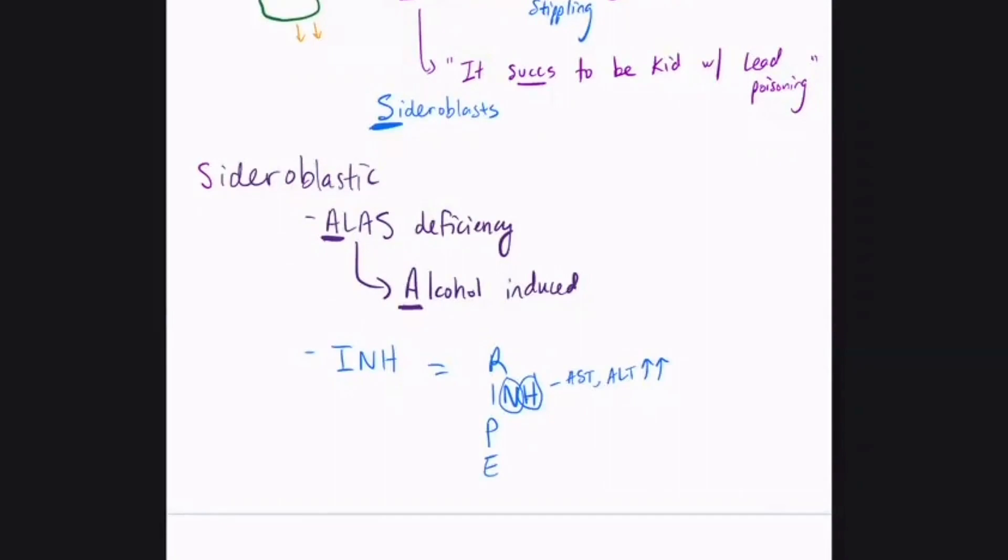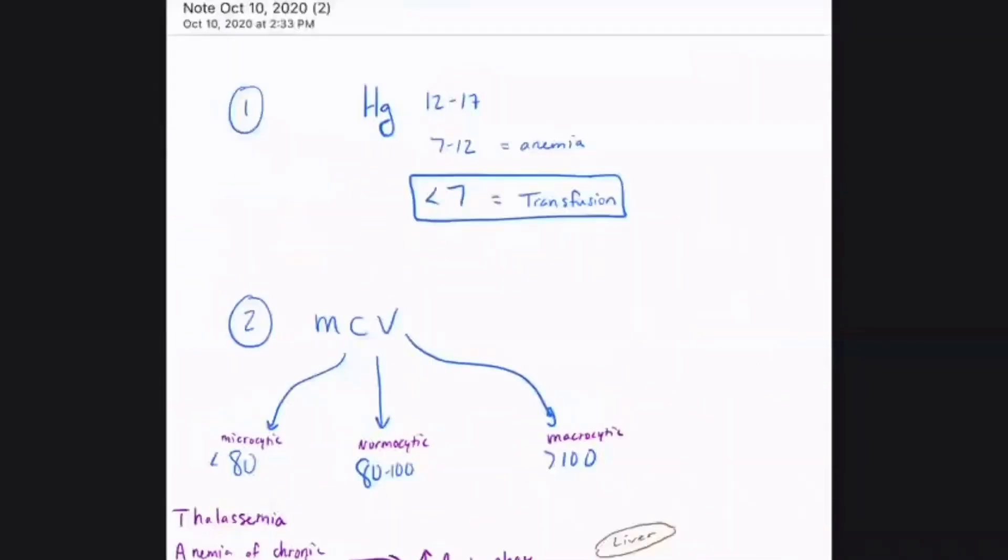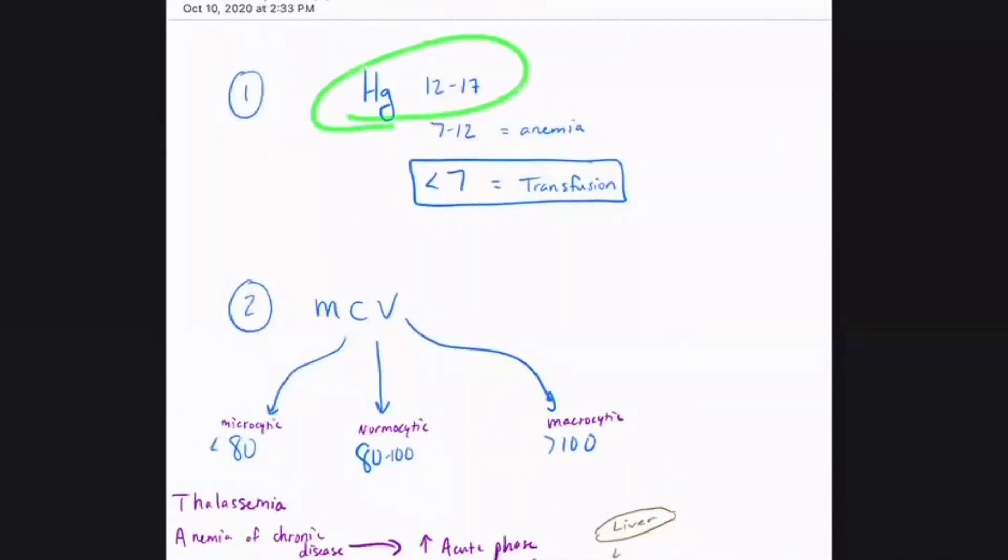And they're also going to have dyspnea because they're going to be short of breath. So think about why they'd be short of breath. The whole role of a red blood cell is to basically carry oxygen where it needs to go. So if you don't have enough red blood cells,